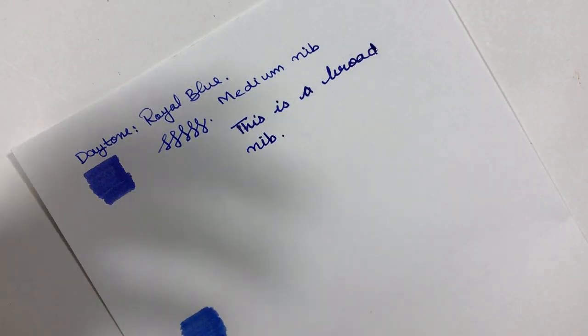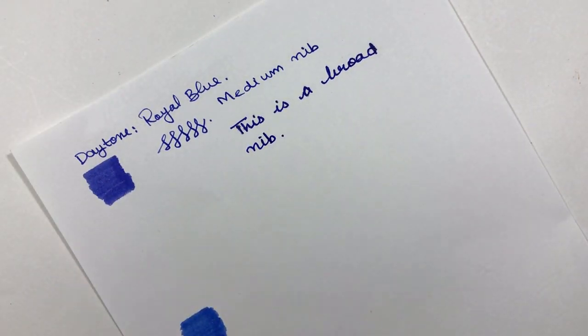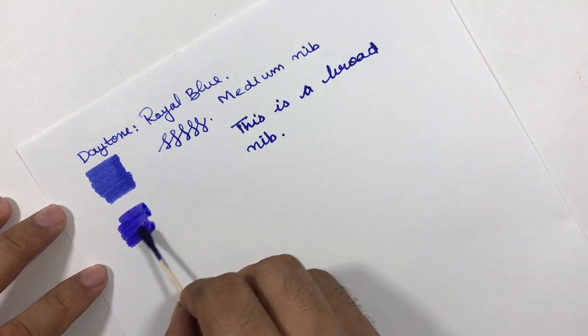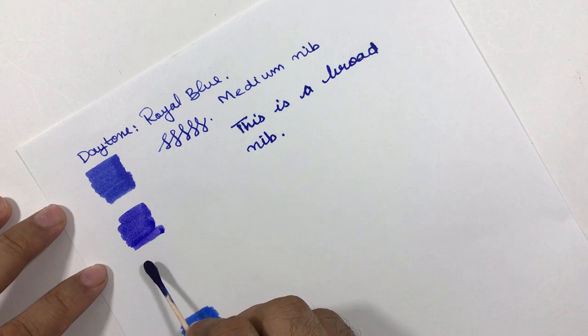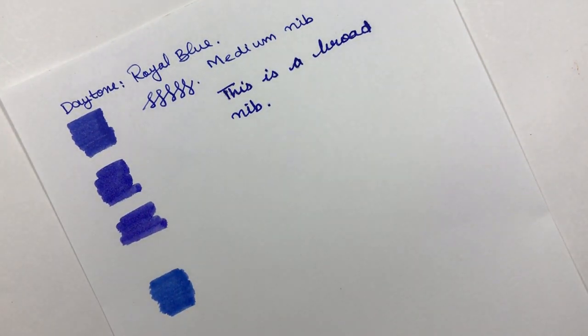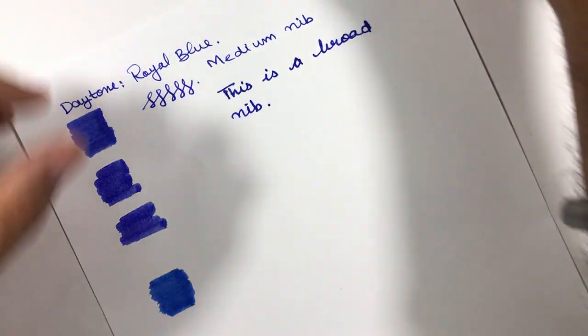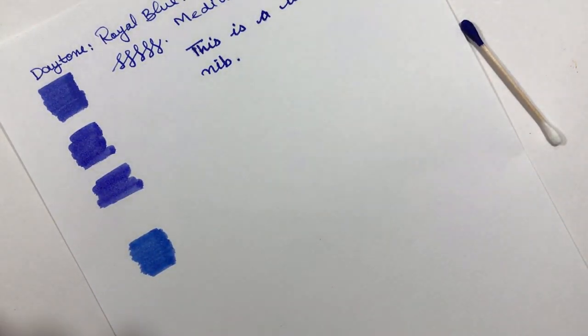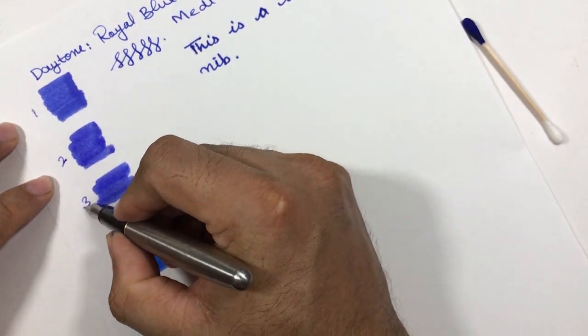We'll see how this ink behaves. Now we can have a second pass. I'll have a second pass over here, and then over this we can have a second pass, third pass. You can see one, two, and three.